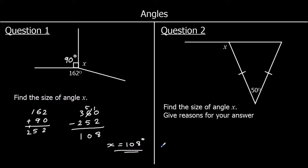In question two we need to find the size of angle X. We have a triangle with two lines on it. Those two lines mean that the two lengths are equal — this is called an isosceles triangle. An isosceles triangle has two equal lengths, and we call the other length the base.